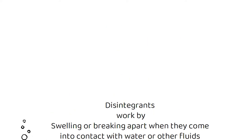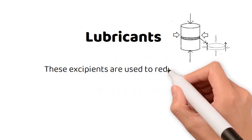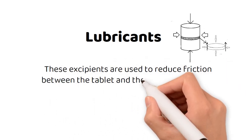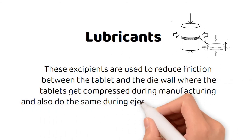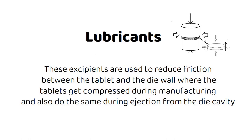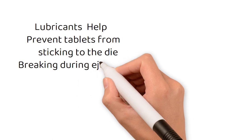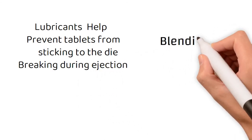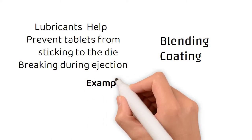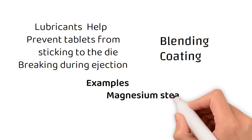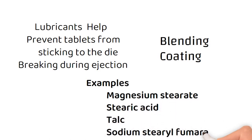Additionally, we will cover lubricants — the fourth group. These excipients are used to reduce friction between the tablet and the die wall where the tablets get compressed during manufacturing, and also during ejection from the die cavity. They help to prevent tablets from sticking to the die and breaking during ejection. Lubricants can be added either during blending or as a coating on the tablet's surface. Examples of lubricants include magnesium stearate, stearic acid, talc, and sodium stearyl fumarate.